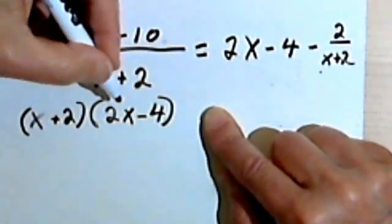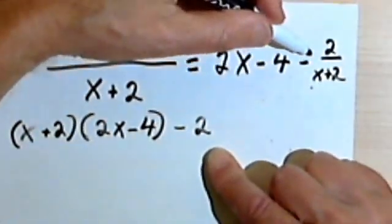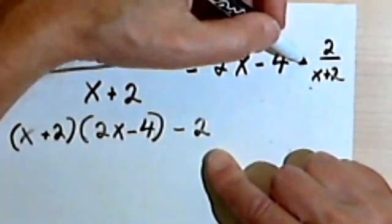And whatever I get here, I'm going to combine that with my remainder, which was negative 2.